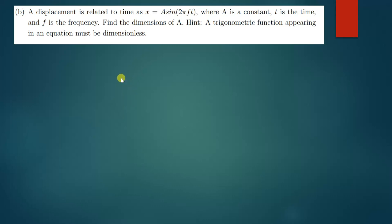So the question says a displacement is related to time as x, so the displacement is related to time as x, let me just change the color, as x is equal to A, then we have sine 2πft where A is a constant, t is time and f is the frequency. Find the dimensions of A.